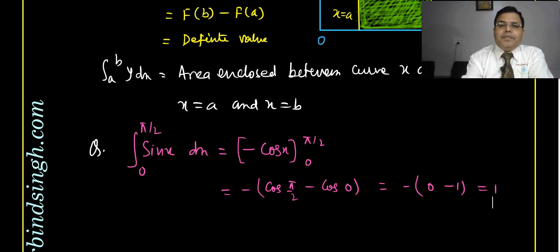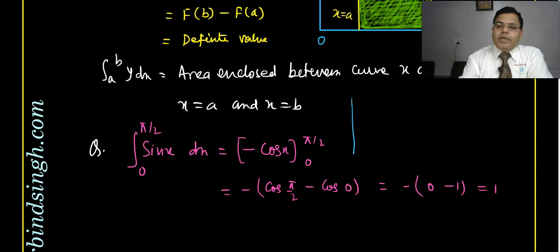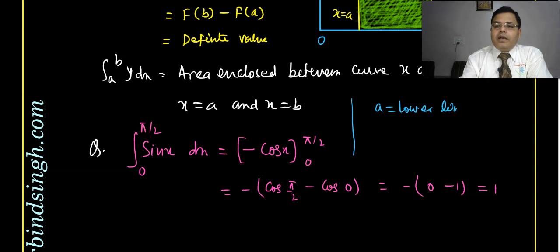Remember: in ∫(a to b), 'a' is called the lower limit of integration and 'b' is called the upper limit of integration.